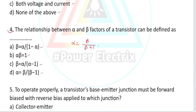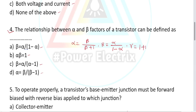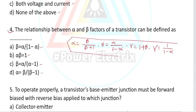If we know alpha, we can find beta: beta equal to alpha by 1 minus alpha. Additionally, if the question asks about gamma: gamma equals 1 plus beta, or equivalently gamma equals 1 by 1 minus alpha. These relationships should be memorized for basic questions.